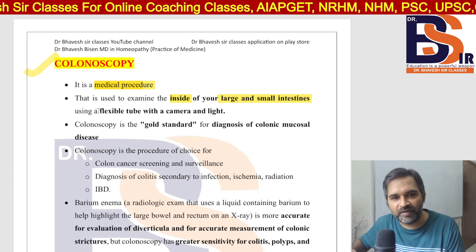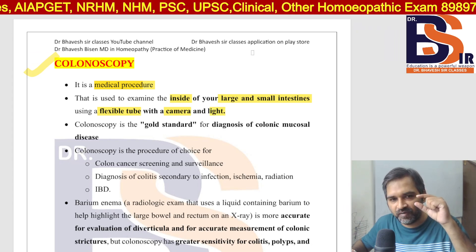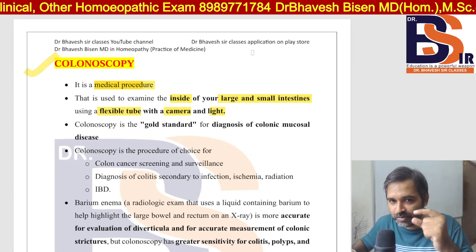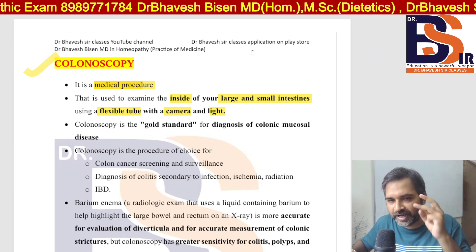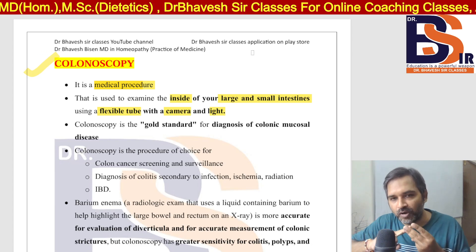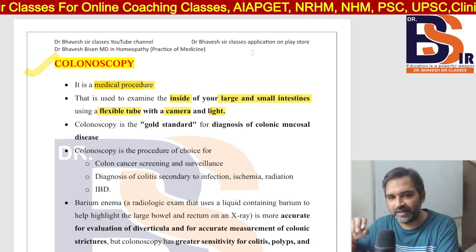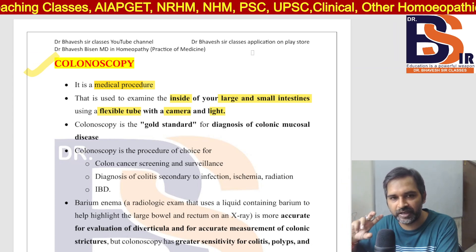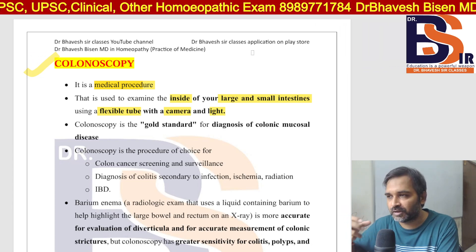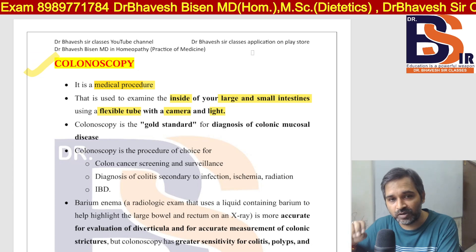In this procedure, a flexible tube with a camera and light is used to examine the inside of the small intestine and large intestine — to see how they are structured. This medical procedure is called colonoscopy, and it uses a flexible tube, camera, and light to examine the inside of the large intestine and small intestine.